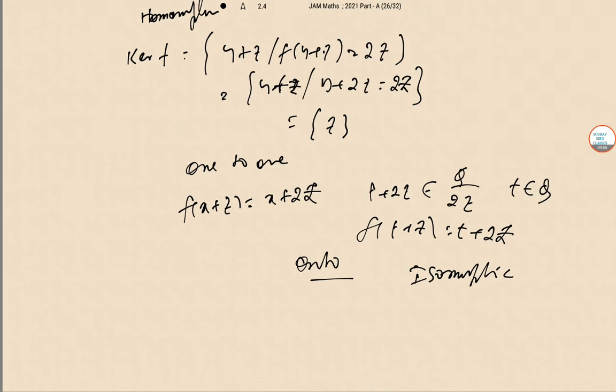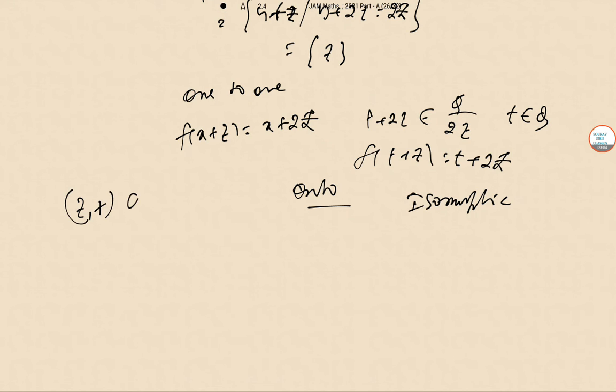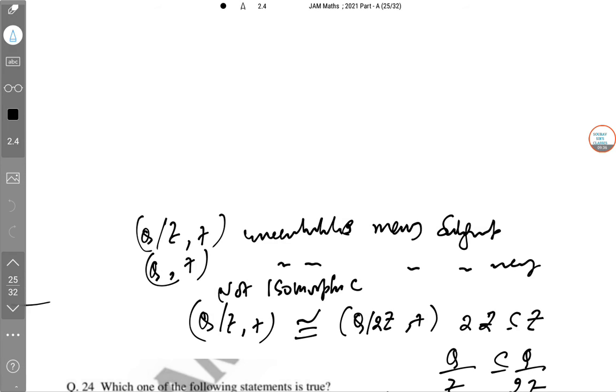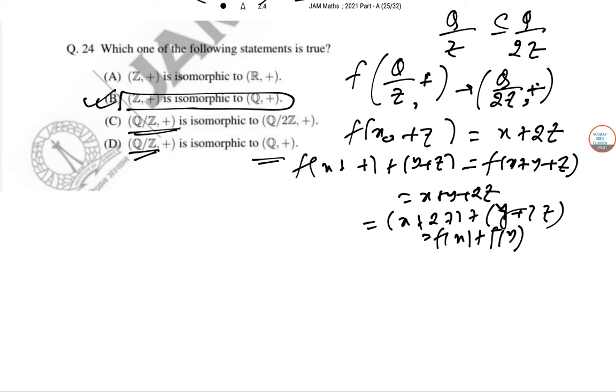With respect to the other options, Z comma plus, this is cyclic. And Q comma plus is non-cyclic. So, they cannot be isomorphic. And Z plus is countable, R plus is uncountable. So, they cannot be isomorphic again. So, hence in this case, the answer is Z plus is isomorphic to this. B is the answer.